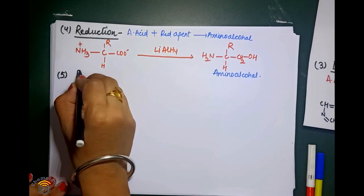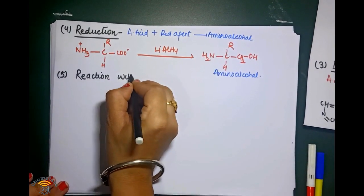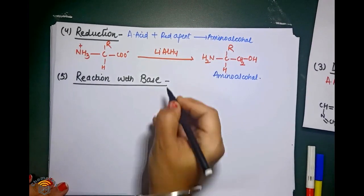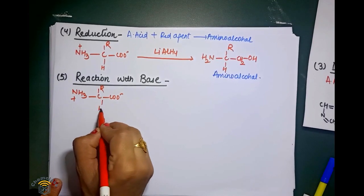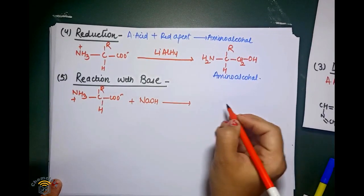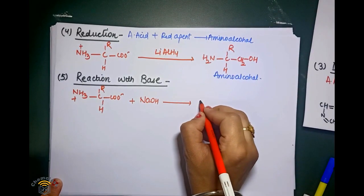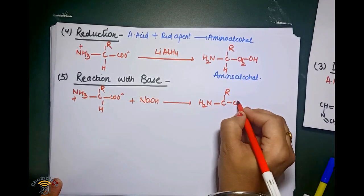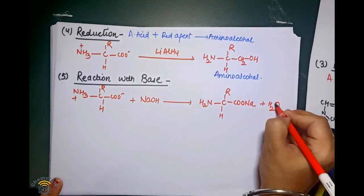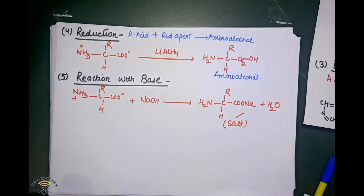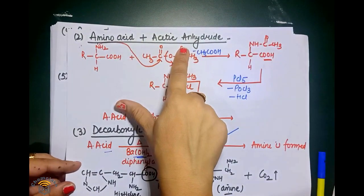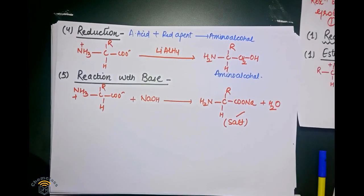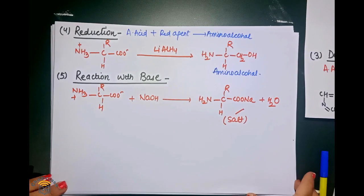The fifth reaction is the reaction with base. When amino acid reacts with base, we get a salt. A salt is formed after the reaction. So to summarize: first is the esterification reaction; second is the acetylation reaction; third is the decarboxylation reaction; fourth is the reduction reaction; and fifth is the reaction with base. These are all the basic reactions of amino acid given by the COOH group.